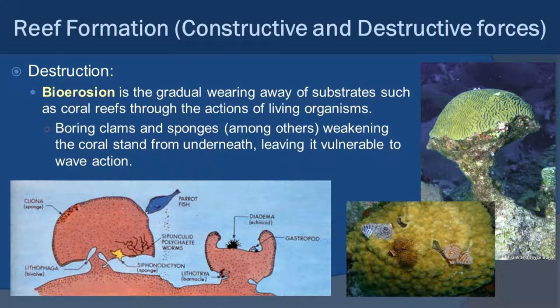The first thing we'll look at is constructive and destructive forces within the reef. Previously in the other set of notes we did talk about reef formation, and there is a continuum of destruction of that particular formation. Part of that is what we call bioerosion — this is where you have living organisms actually breaking down reef structure. This can include things like boring clams and sponges that will start to weaken the infrastructure of a coral from usually below, and you can see in the picture to the right where you have that really narrow piece holding up a coral, and eventually that's going to topple.